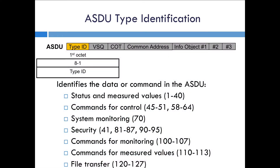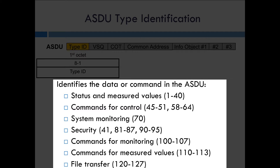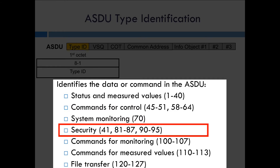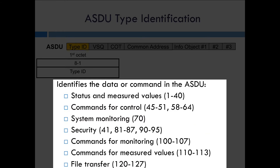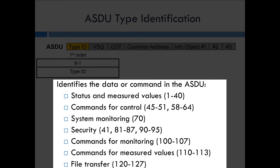The type ID is the first octet in the ASDU. There are up to 127 different ASDU types, grouped into different sections: status and measured values covering the different data types which can be included, commands identifying what type of command request is being sent from the master, and the new security types added for the secure authentication part of the standard. There are also commands for control, commands for monitoring — such as interrogation and reading objects versus commands for setting outputs, binary outputs, and set points — plus commands for measured values and file transfer related commands.